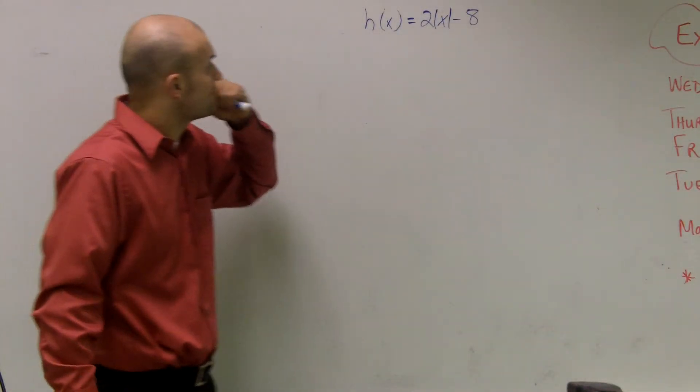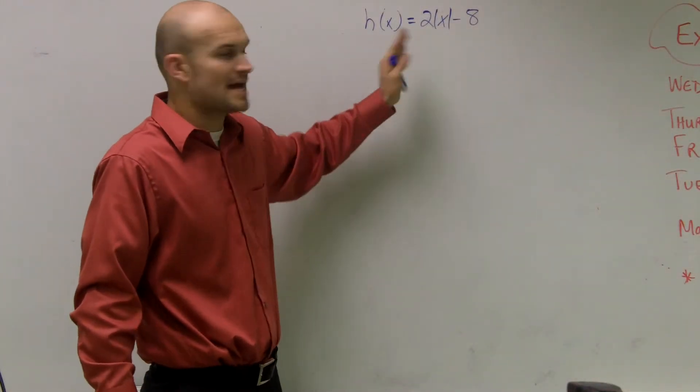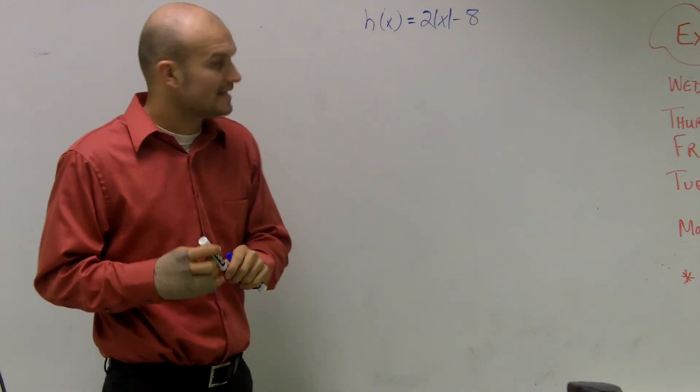Alright, what I'd like to do is show you guys how to graph h of x equals 2 times absolute value of x minus 8.